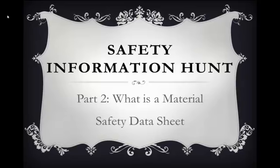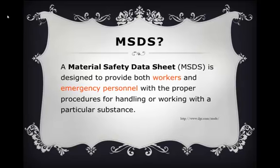Safety Information Hunt Part 2: What is a material safety data sheet? MSDSs, or material safety data sheets, are documents that spell out safety and hazard information for chemical compounds. They are meant to be used by workers and emergency personnel and are not intended for consumers. When you are in the lab for general chemistry, you are considered to be working with chemical compounds — that's one reason you need to know about MSDSs.